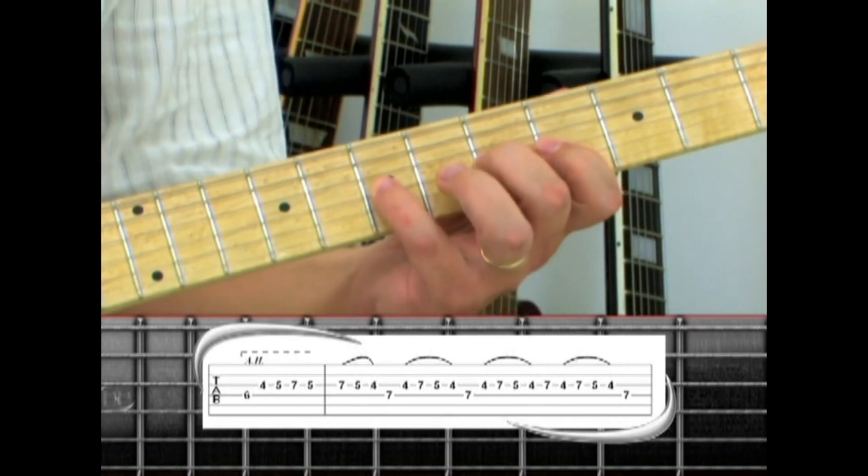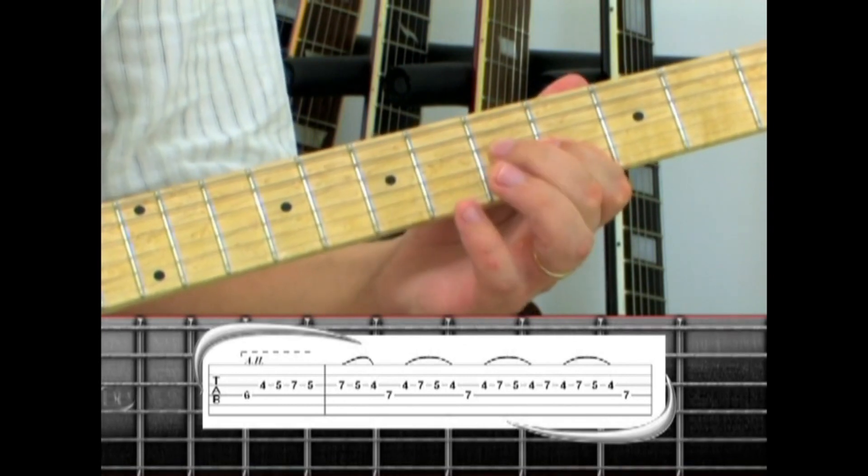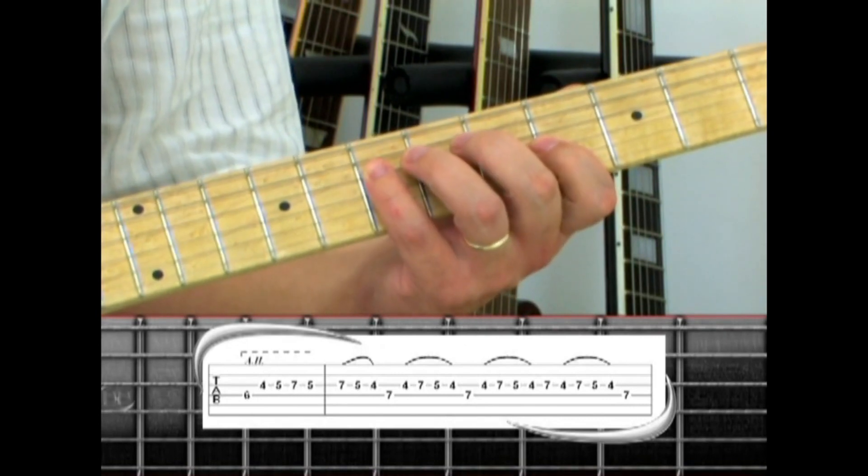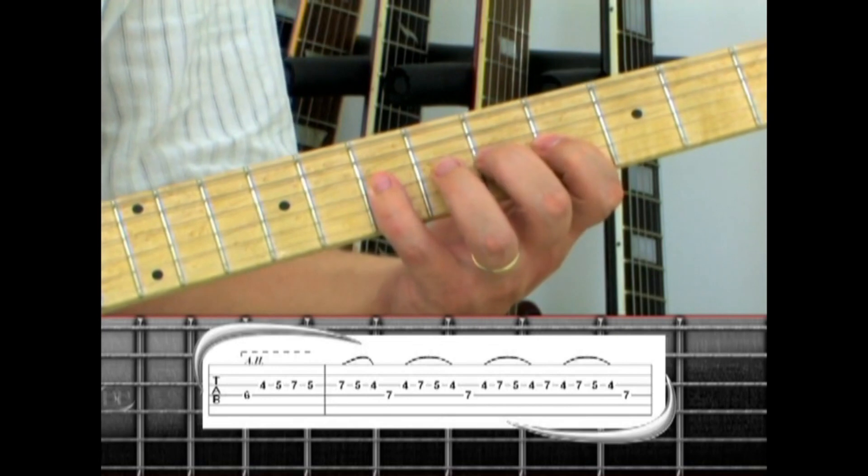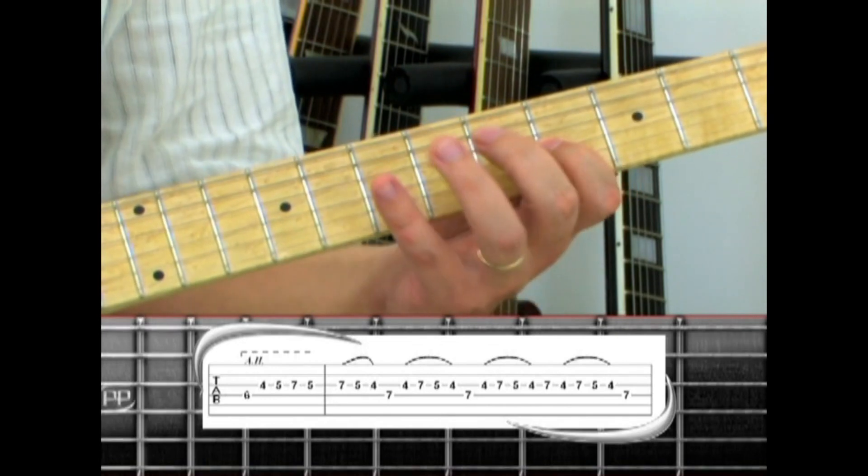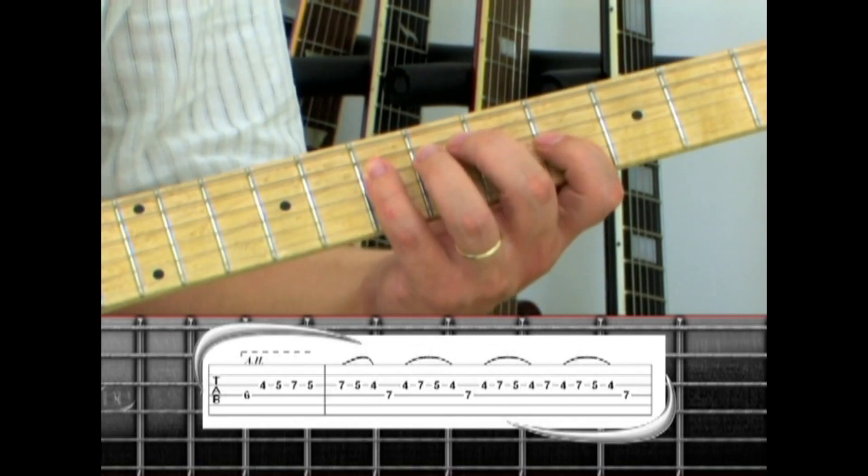Next, pull seven to five, four, and fourth string seven, back to third string four, hammer to seven, pull to five, to four, to fourth string seven, back to four, hammer to seven, pull to five.